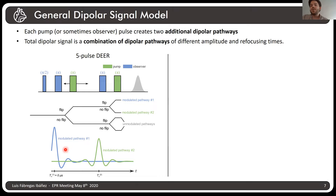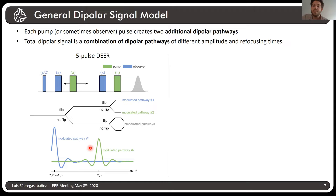The first modulated pathway is where both pump spins have flipped, and we set its refocusing time to zero microseconds. The second pathway refocuses at the time T02, which is completely determined by your pulse sequence parameters — the delays in the pulse sequence. The amplitudes of these pathways are related to the inversion probability of the pump pulses. That's the reason the second pathway is usually more suppressed relative to the first one.